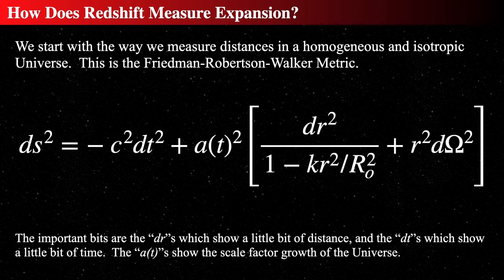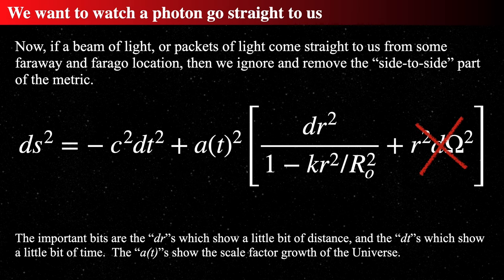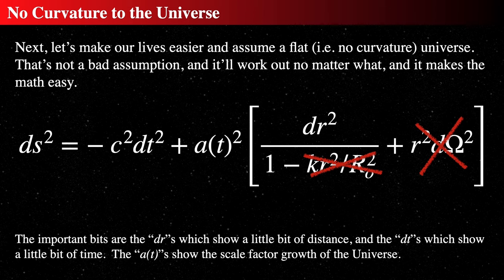We have dr, the radial distance — straight from the vibrating electron we saw earlier. We're going to simplify: we only care about photons coming straight to us, not diverted left or right, so we cancel the angular terms and keep only the radial dr. Next, we assume a flat universe and drop the curvature term. That makes the math a lot easier.